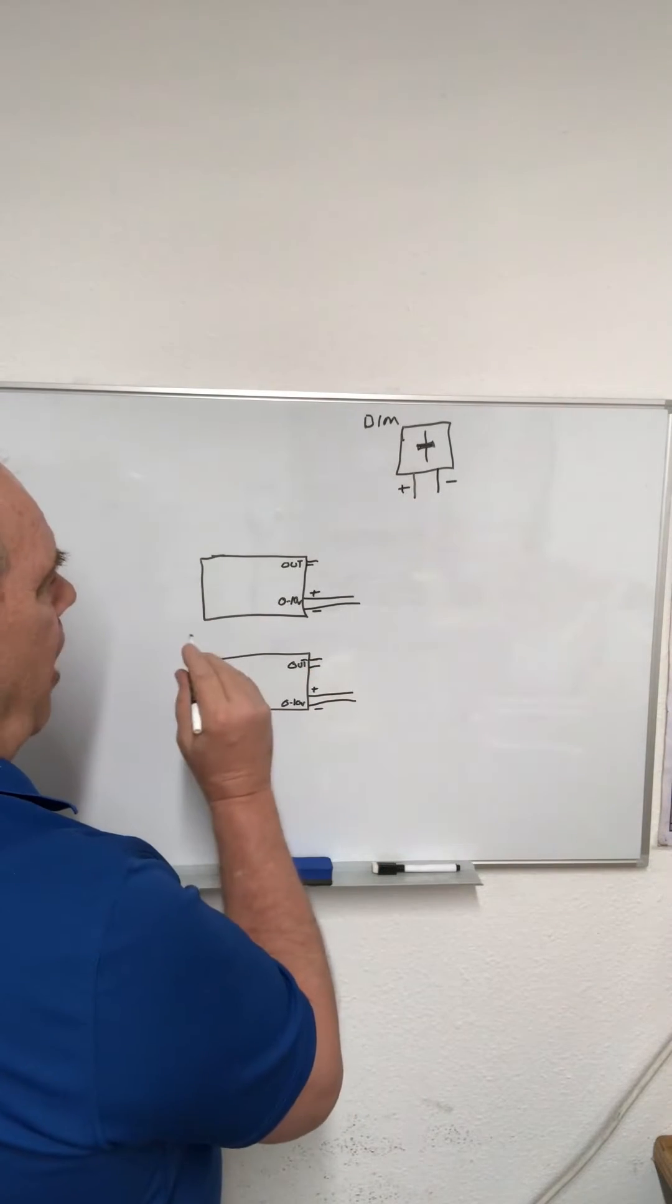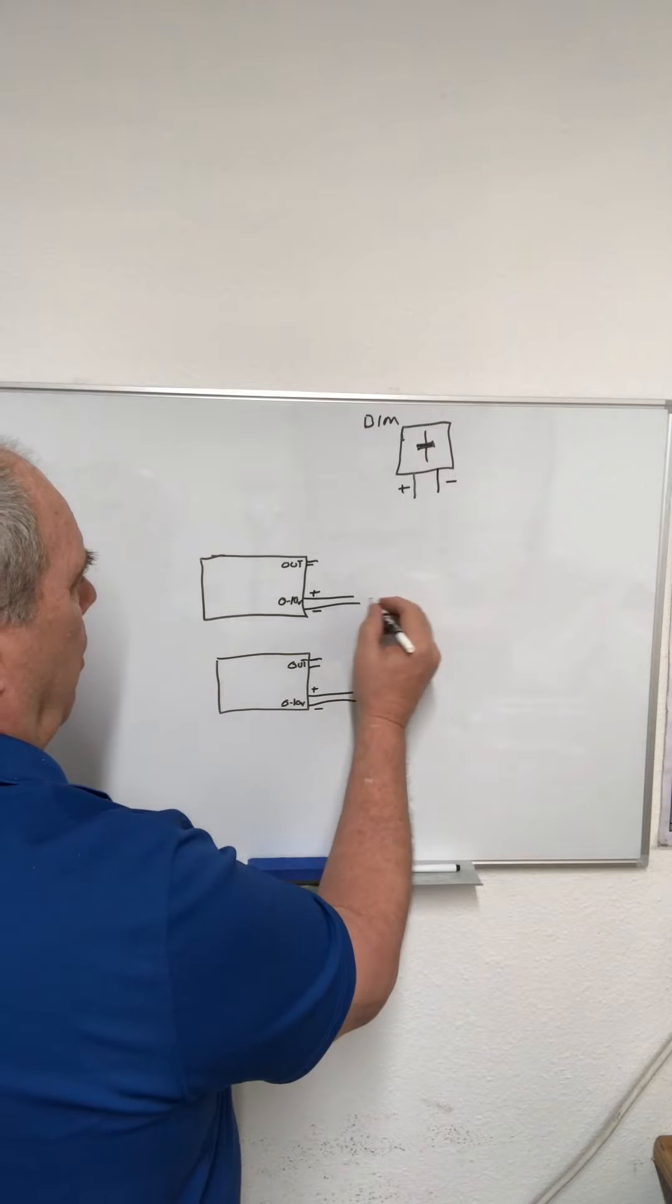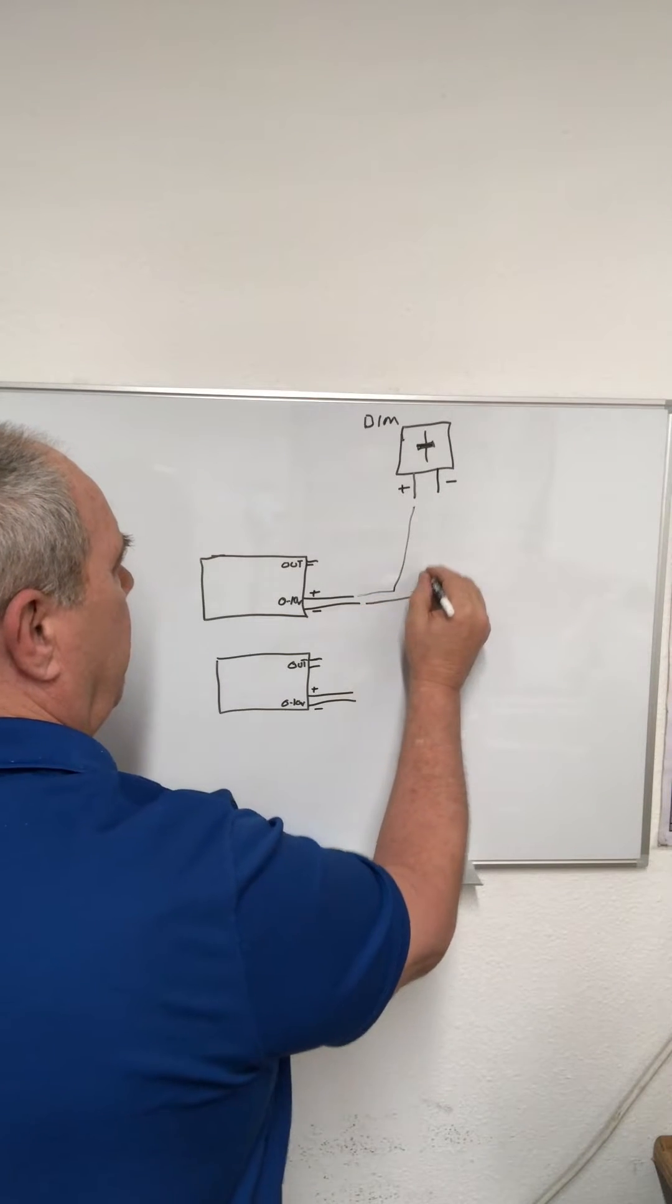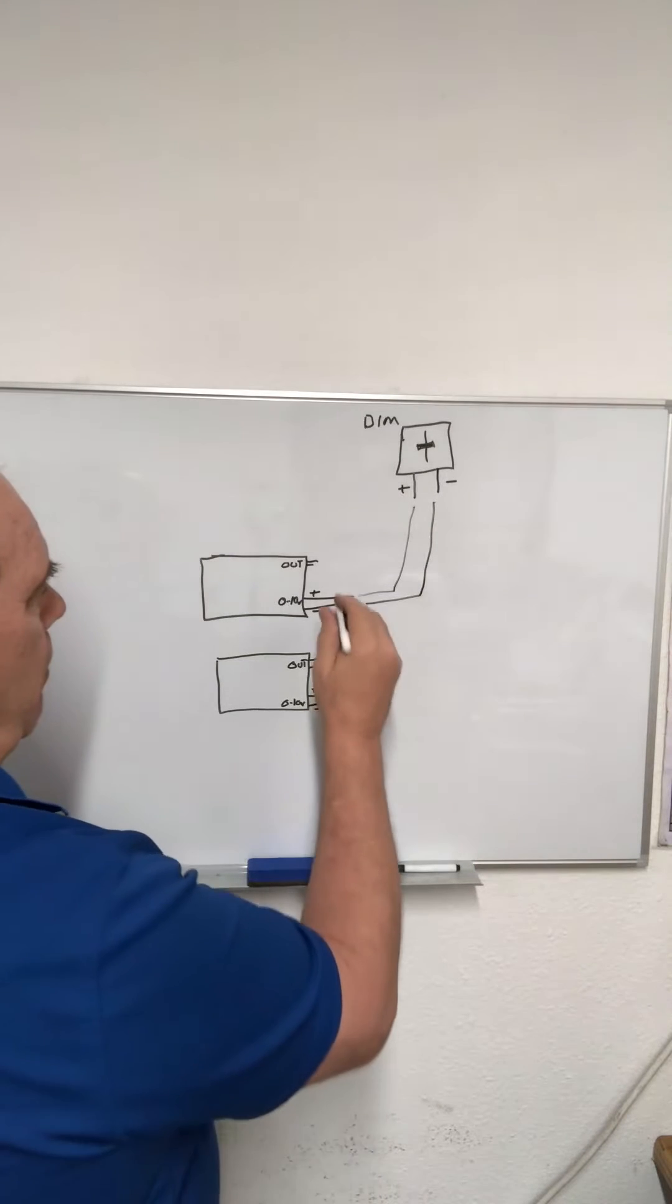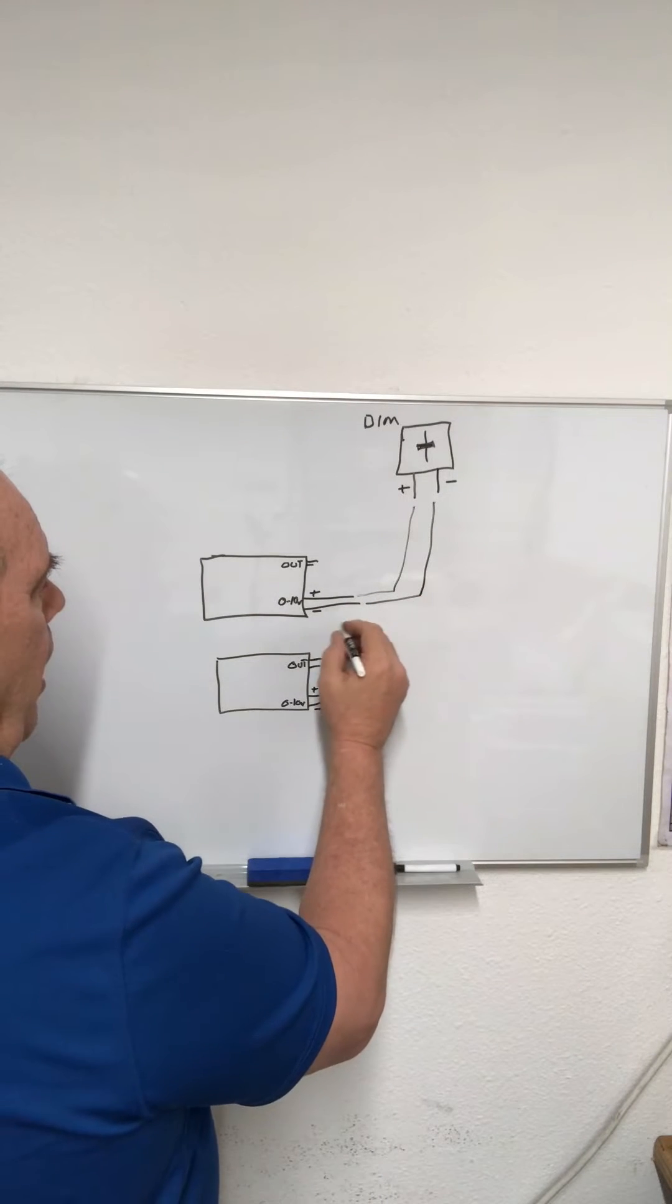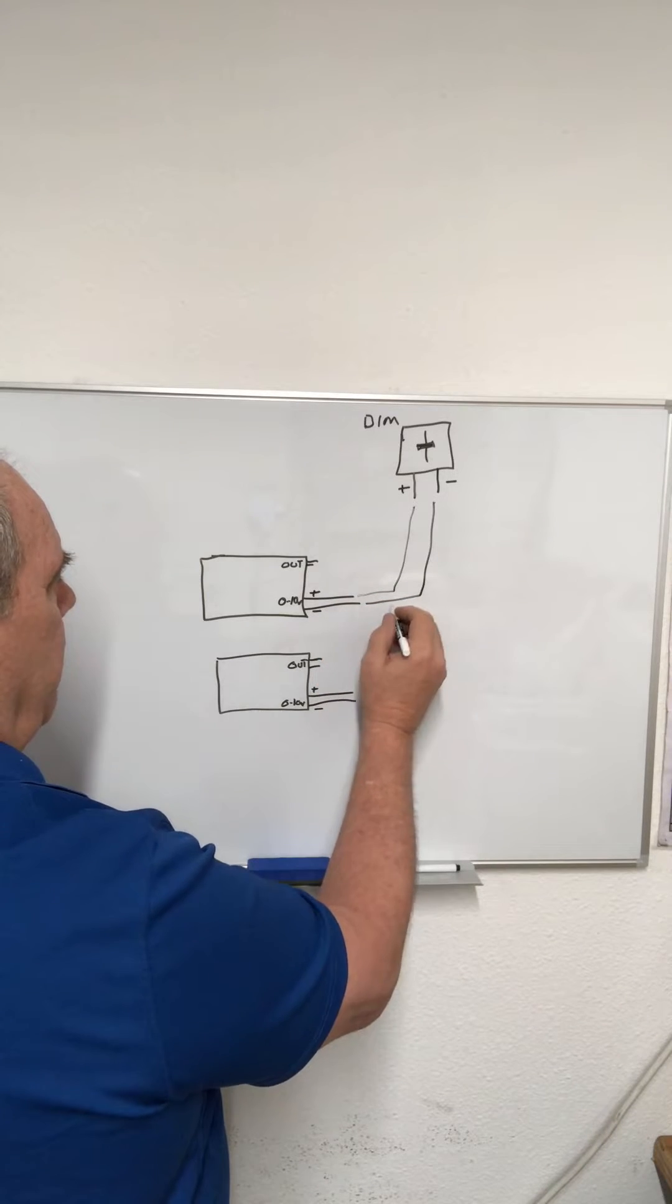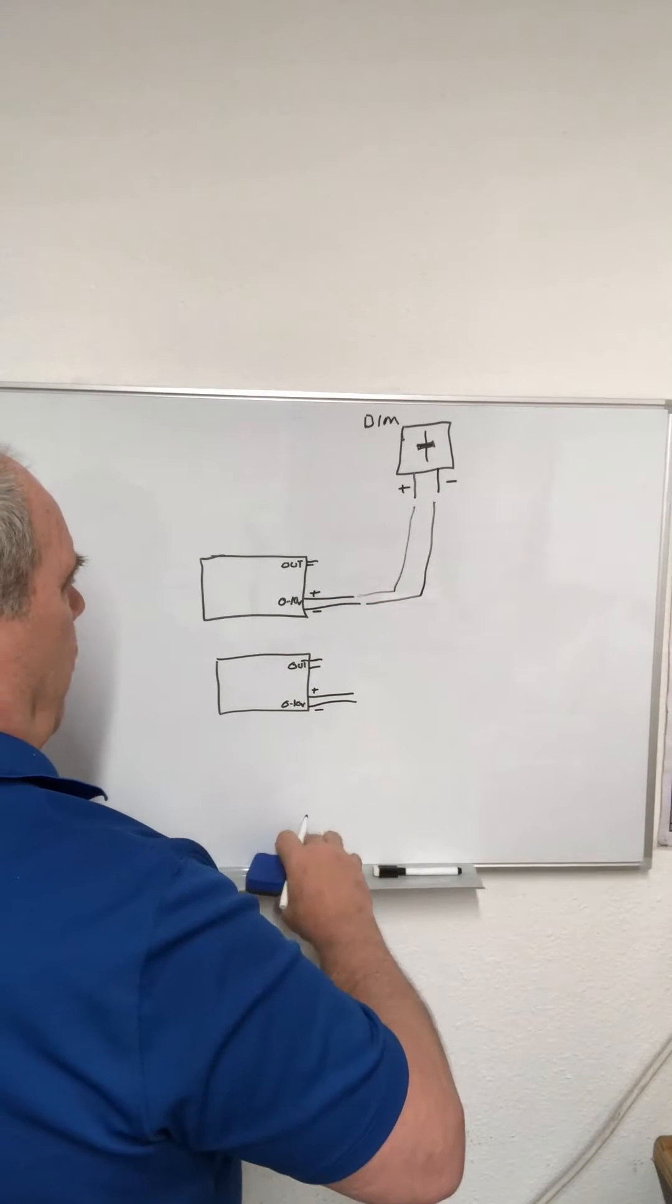Usually with just one driver it would be straightforward where you'd have the positive going to the positive and the negative going to the negative, or gray to gray, or purple to purple and violet to violet.